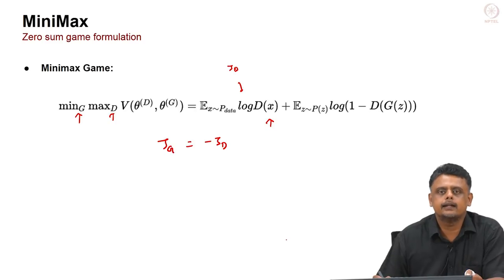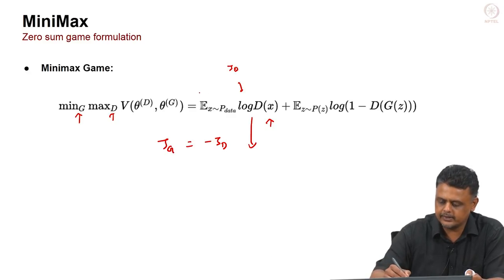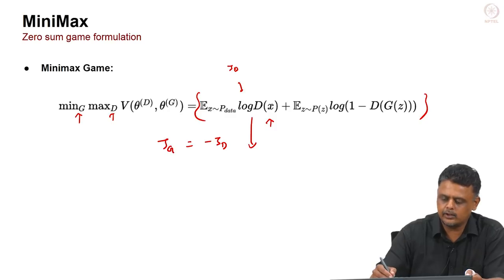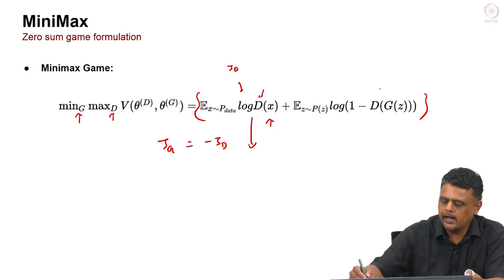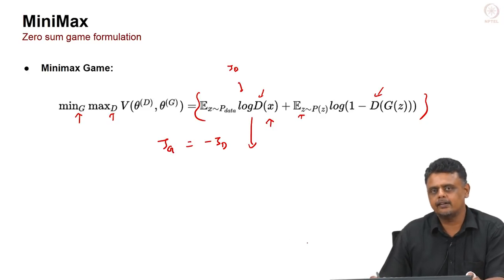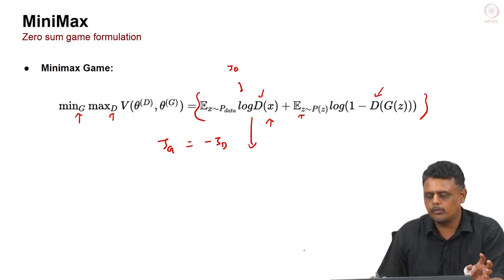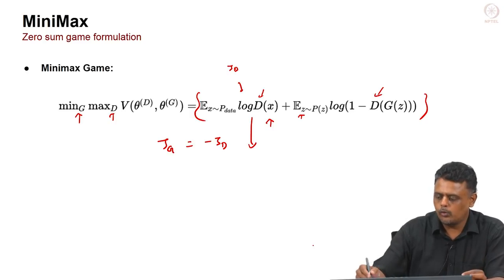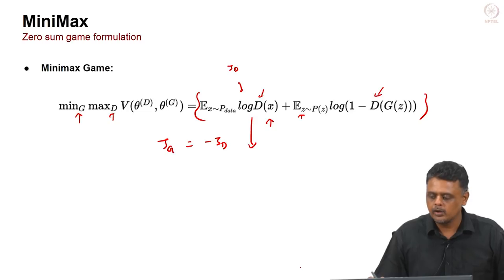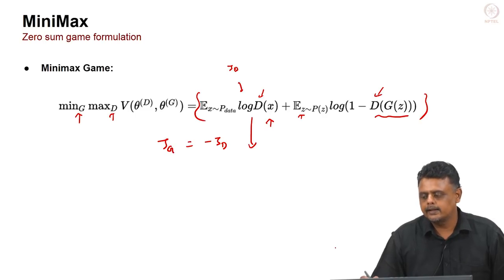Looking at the cost function itself: it is the expectation of log D(X) plus the expectation over Z of log(1 − D(G(Z))). You calculate log D(X) with respect to the training data samples, and the second term with respect to the samples generated from Z. This is very similar to binary cross entropy assuming an equal number of generated images and training data samples. D(G(Z)) is basically the output of the discriminator when generated images are given as input, and D(X) goes from 0 to 1 — the probability of a sample being real or fake.